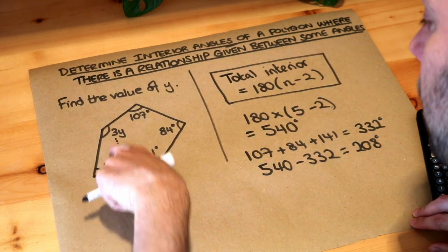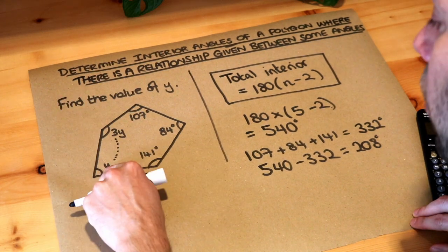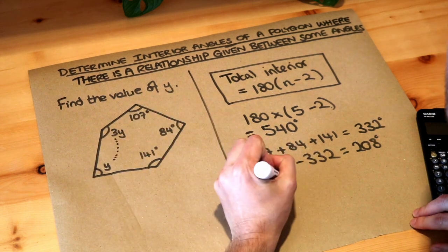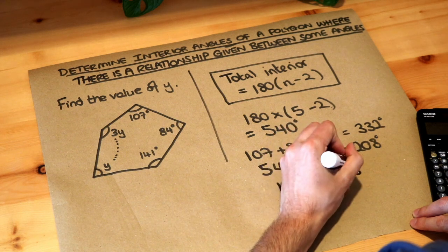Now what do these two angles add up to? Well y plus 3y is 4y. One lot of y plus three lots of y is 4y. So 4y must be equal to that angle left of 208 degrees.